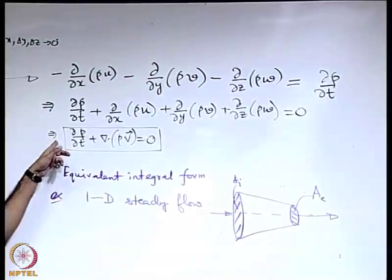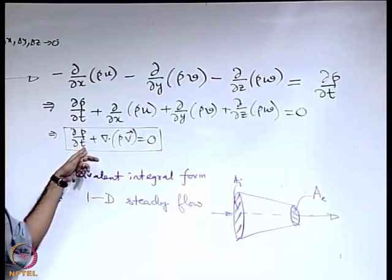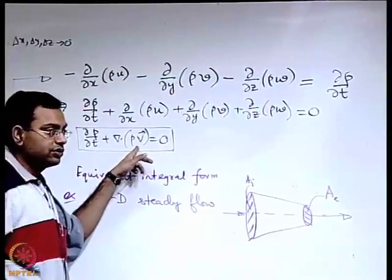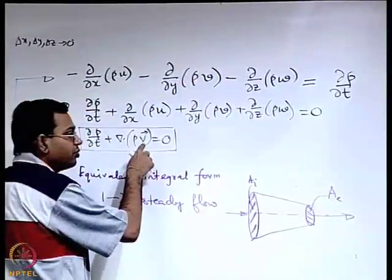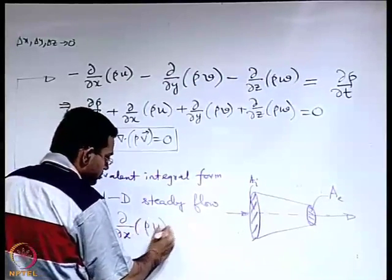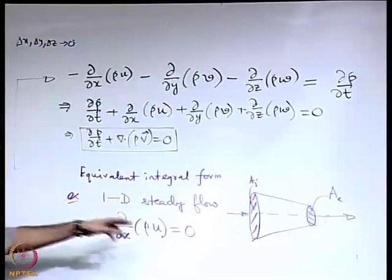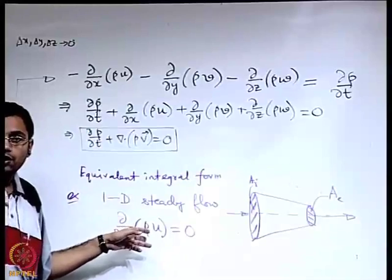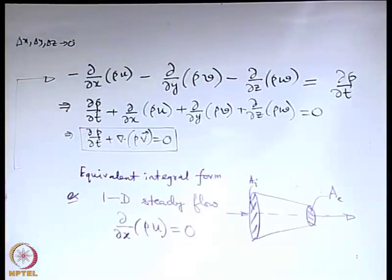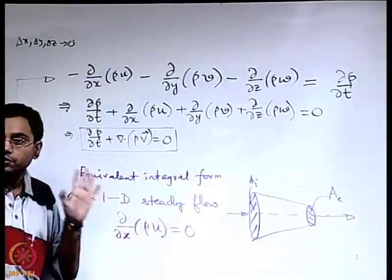To simplify the differential form for steady 1-dimensional flow: when the flow is steady, the time derivative vanishes. For 1-dimensional flow, it reduces to only the x-component of velocity. Density rho may still be a function of position — we are not restricting to constant rho and keep rho inside the derivative.